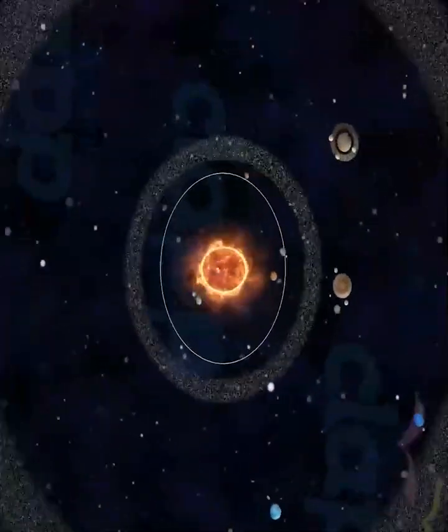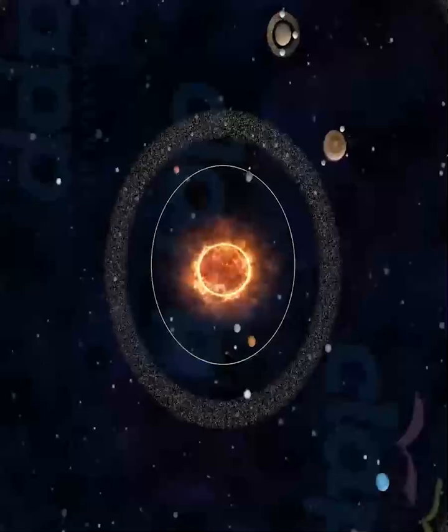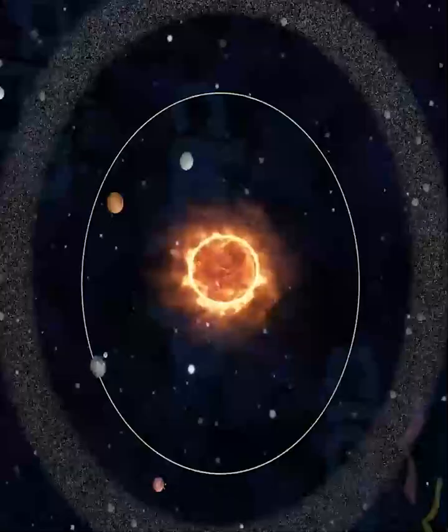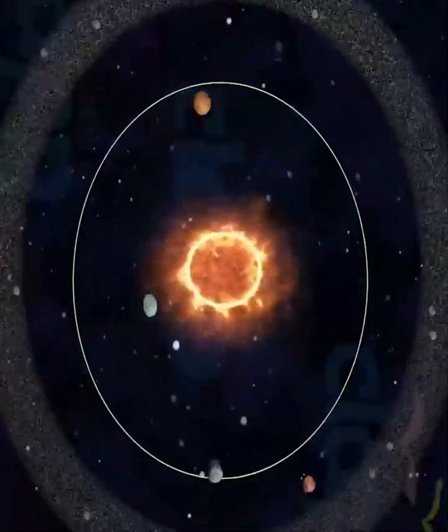Since Earth travels in an elliptical orbit around the Sun, its distance from the Sun varies from 147 million kilometers to 152 million kilometers.